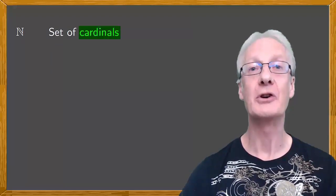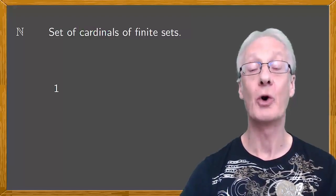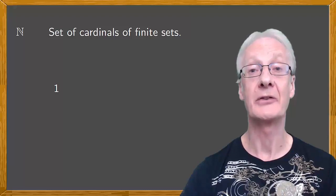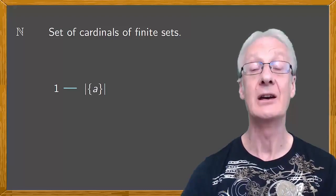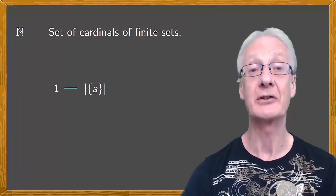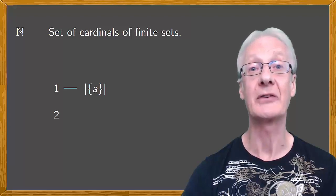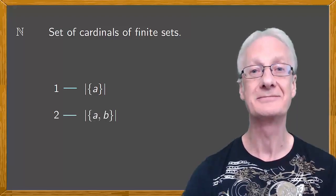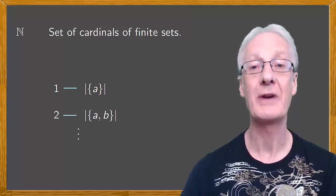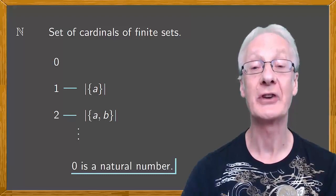It follows that one is a natural number since, for example, it's the cardinal of the set containing the letter a, or whatever other single thing you care to imagine. Two is a natural number because it's the cardinal, for example, of the set formed by the letters a and b, and so on for all the rest of the natural numbers.